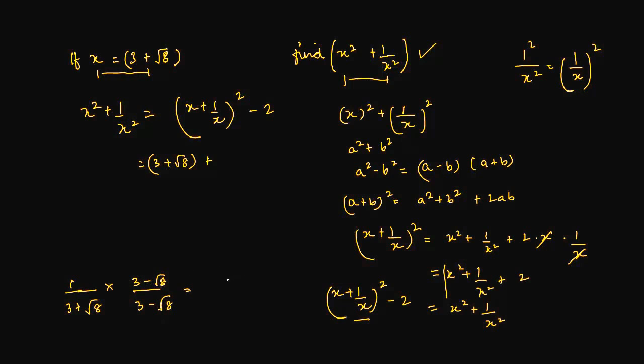So in the numerator you get 3 minus root 8. In the denominator you get a square, a is 3, so 3 square is 9, minus b square, root 8 square which is 8. So this is basically 1. Hence my 1 upon x becomes 3 minus root 8.